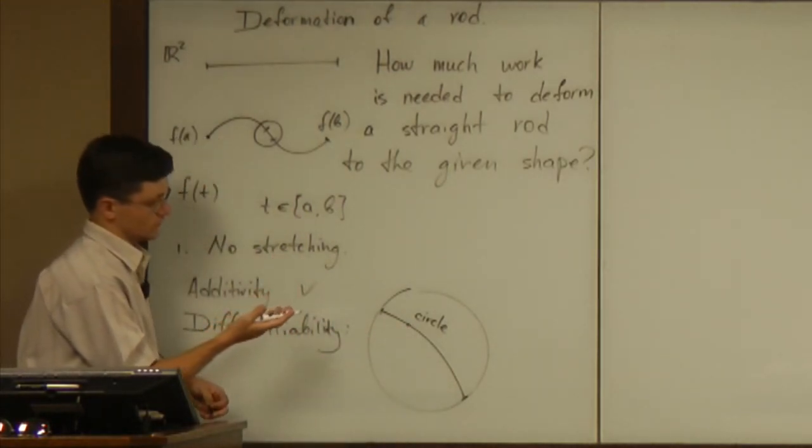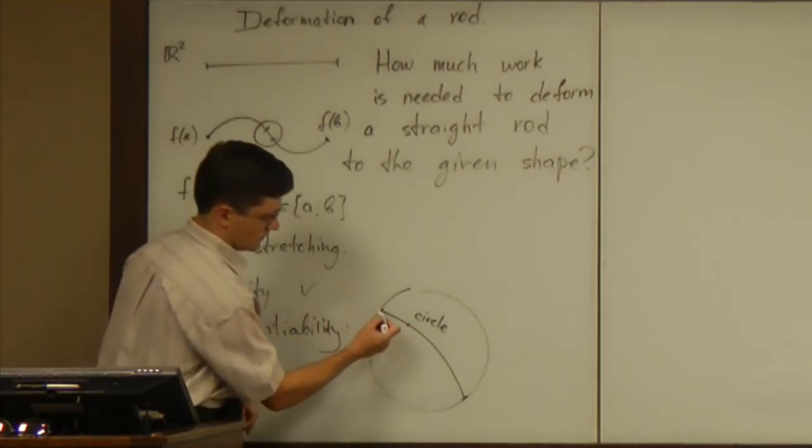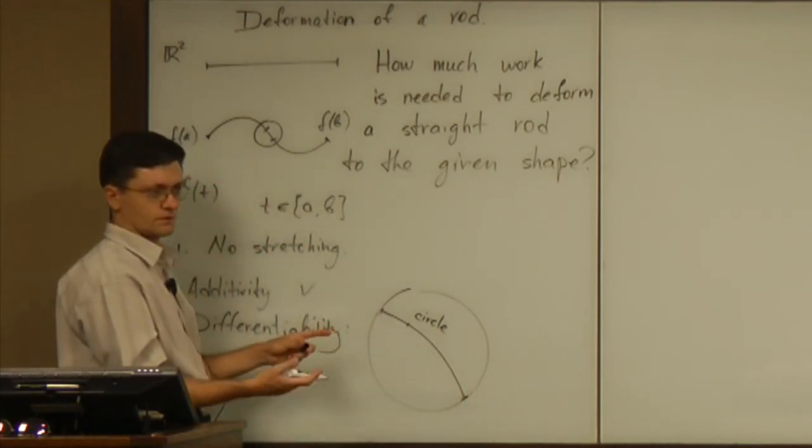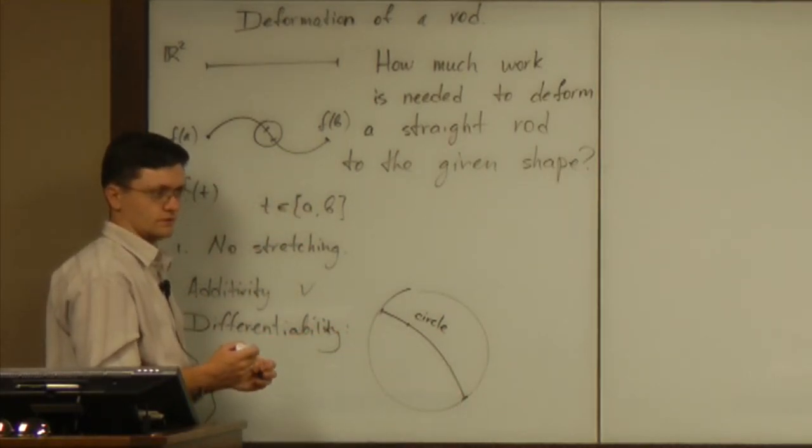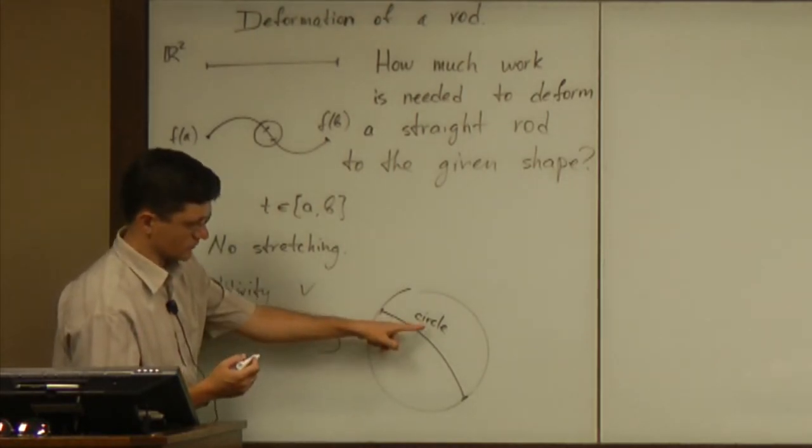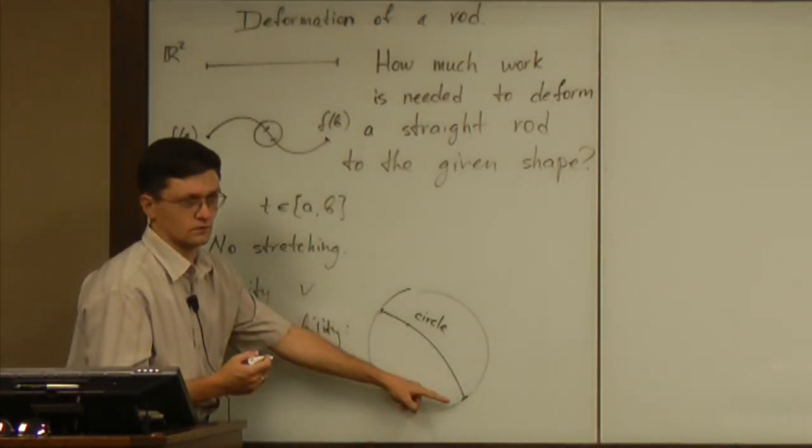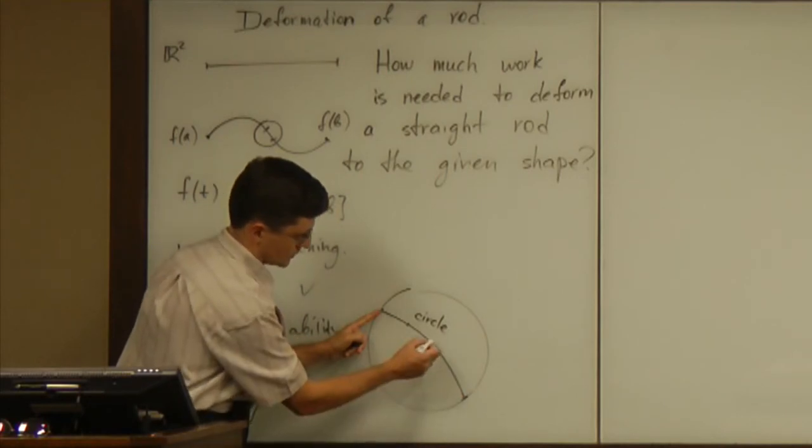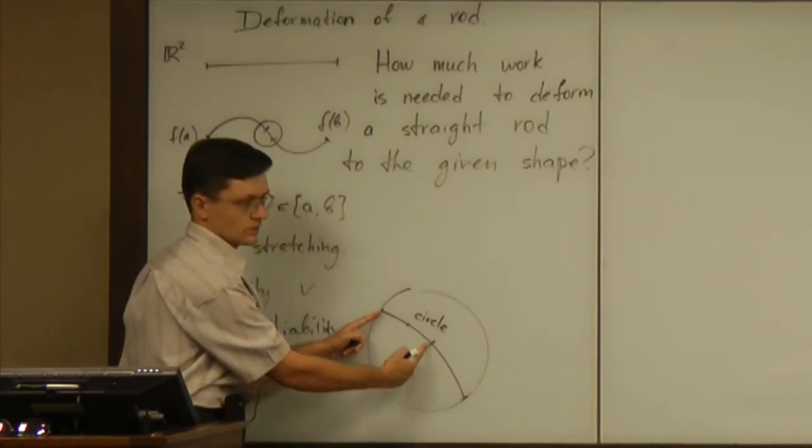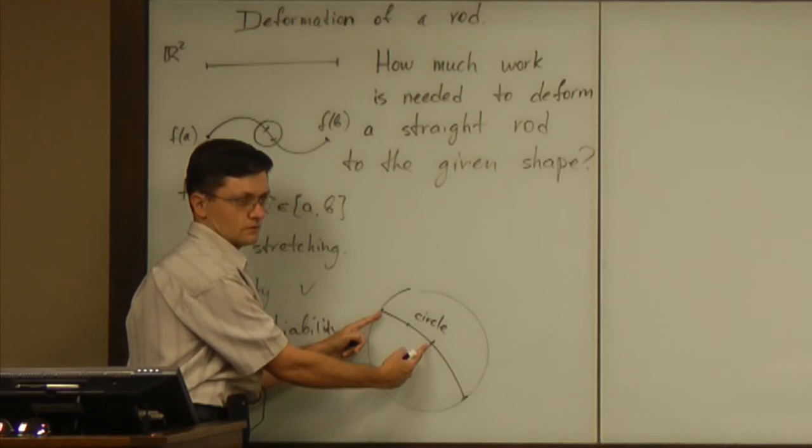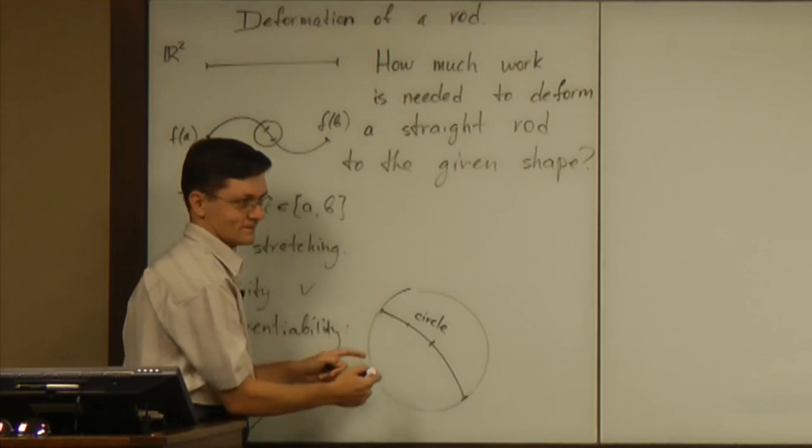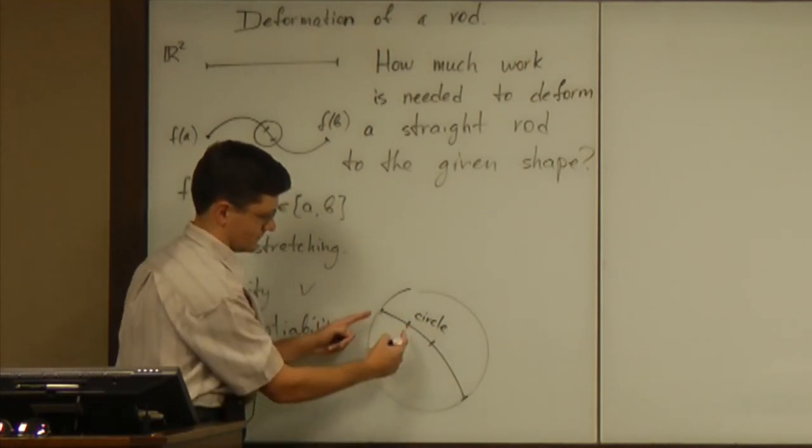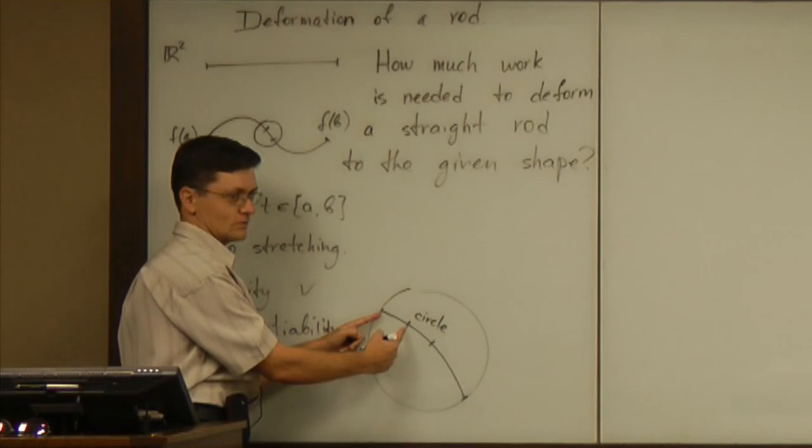So then we have to realize, well, the work needed to bend the given length. Is it proportional to length under this assumption of bending a circle? Is the work needed to bend that much equal to twice the work needed to bend a half of it? Is it four times work needed to bend a quarter?